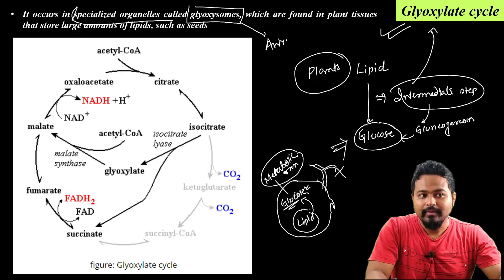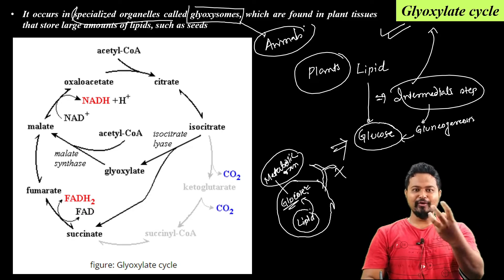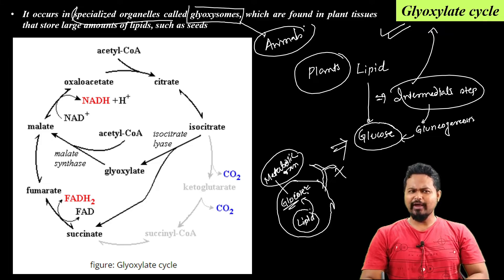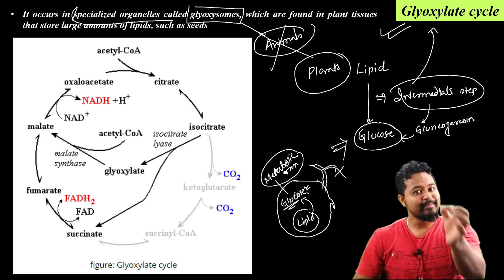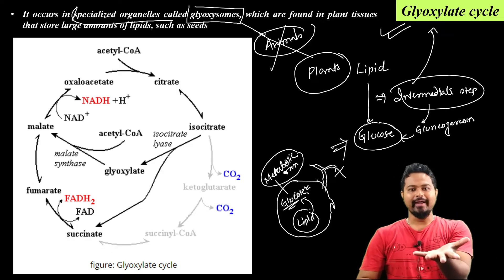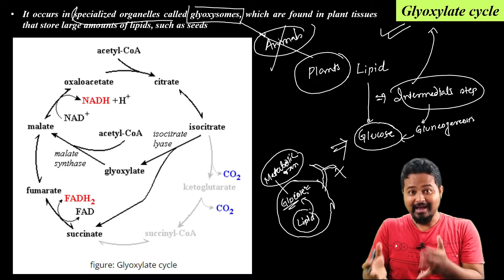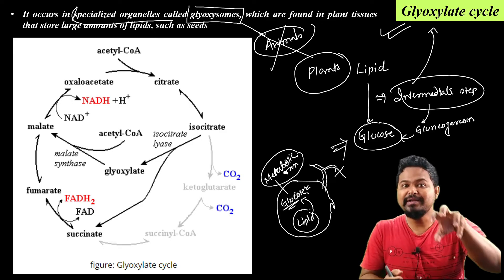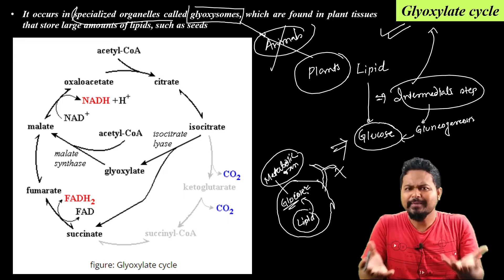Do we find glyoxysomes in animals? No — animals do not have glyoxysomes. Therefore, the glyoxylate cycle does not occur in animals or humans, which means they cannot directly convert lipids into glucose.